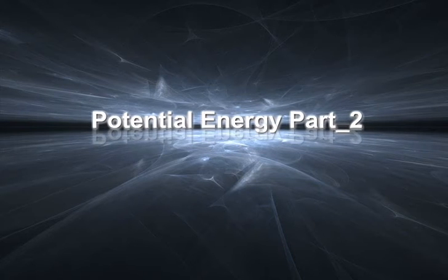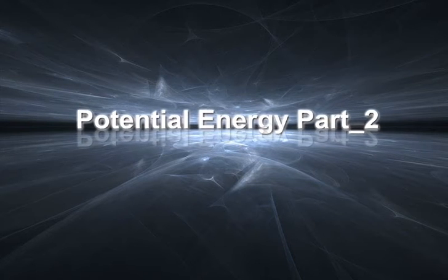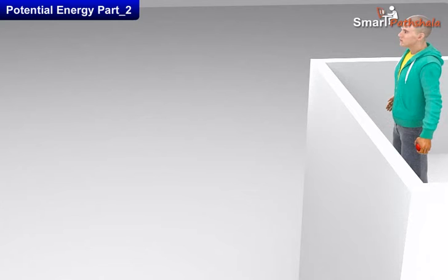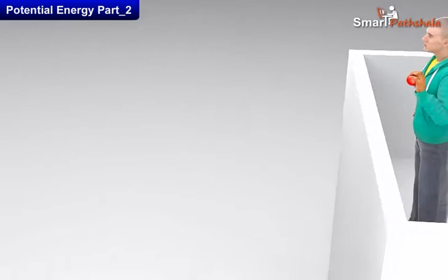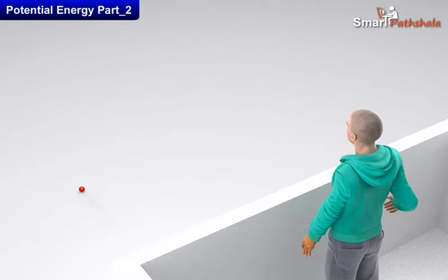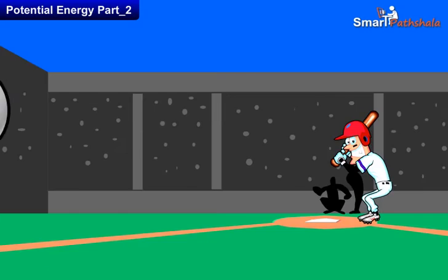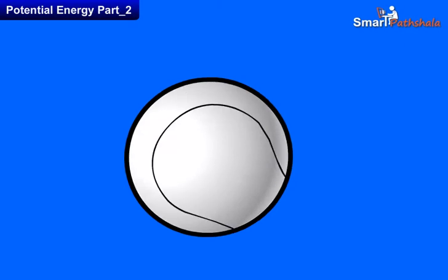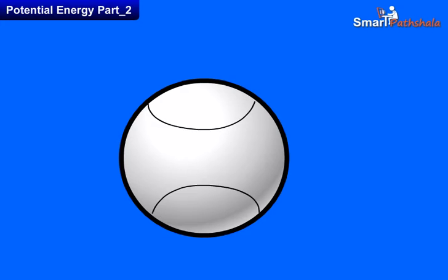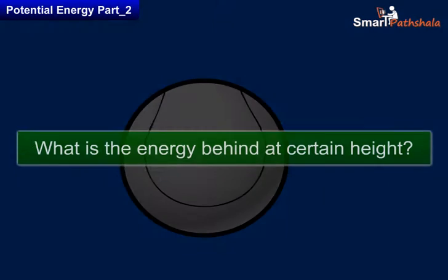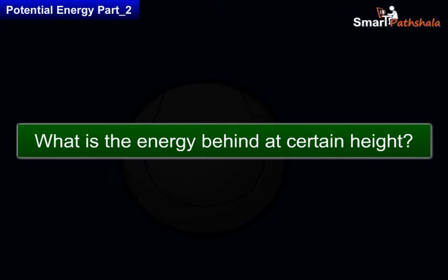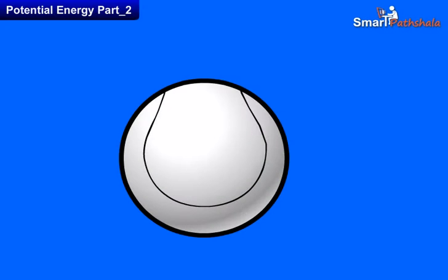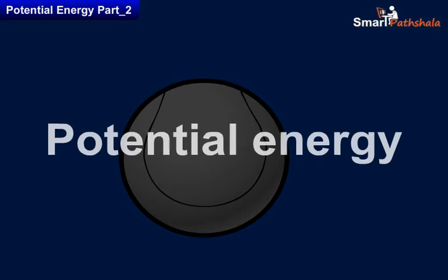Potential Energy Part 2. Have you ever seen that when we drop a ball from a certain height, it falls to the earth at some speed? Similarly, if we hit the ball at a certain height, it will go away out of the boundary. So what is the energy behind this? The energy at a certain level is Potential Energy.